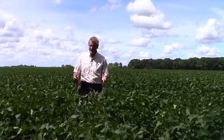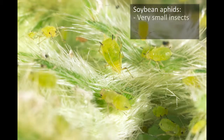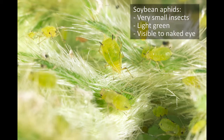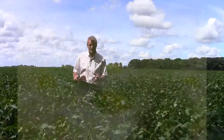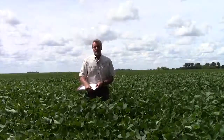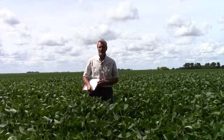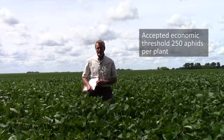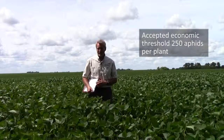First of all, the insect. Soybean aphids are very small, light green insects. They're very small but visible to the naked eye, so they're big enough that you can physically count them. The threshold for soybean aphids has been determined through a lot of field research — counting aphids and determining when yield losses occur. The accepted threshold is 250 aphids per plant.